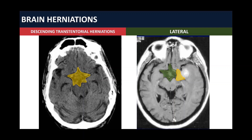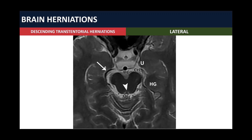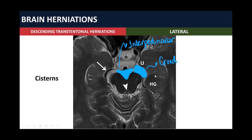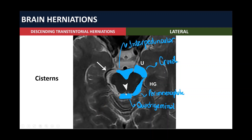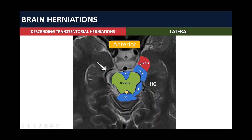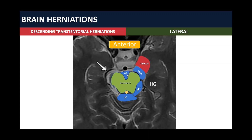Now we are going to study the anatomy of DTH on MRI. This is the uncus, and this is the parahippocampal gyrus. The cisterns include: the interpeduncular cistern between the cerebral peduncles, the crural cistern, the perimesencephalic cistern, and the quadrigeminal cistern. The cerebral aqueduct leads CSF from the third ventricle to the fourth ventricle. This is the PCA. When the uncus enlarges, it will compress firstly the crural cistern in the basal cisterns, then compress the brain stem and the interpeduncular cistern, along with all the structures we studied: the third cranial nerve, the fourth cranial nerve, the PCA, and the anterior choroidal artery.